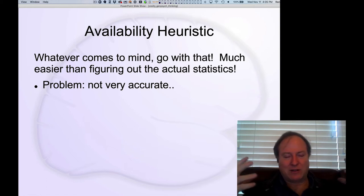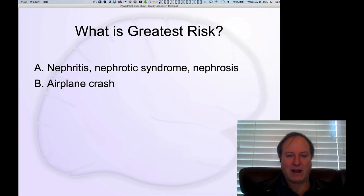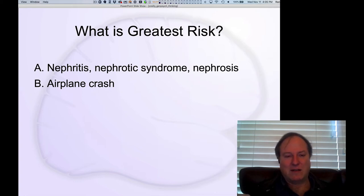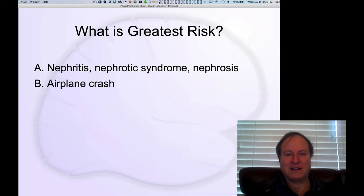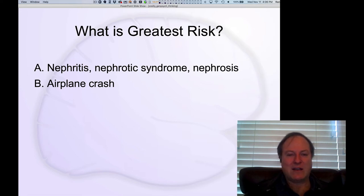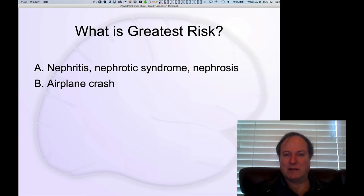We don't like actual abstract statistics. So if I ask you which of these two is associated with the greatest risk of death — nephritis, nephrotic syndromes, and nephrosis, or an airplane crash? Most of us are probably not very familiar with that first set of conditions, but we are all very familiar with airplane crashes. They're very salient, very available, and very concrete things we can picture and visualize because we've seen them in movies and on news stories.